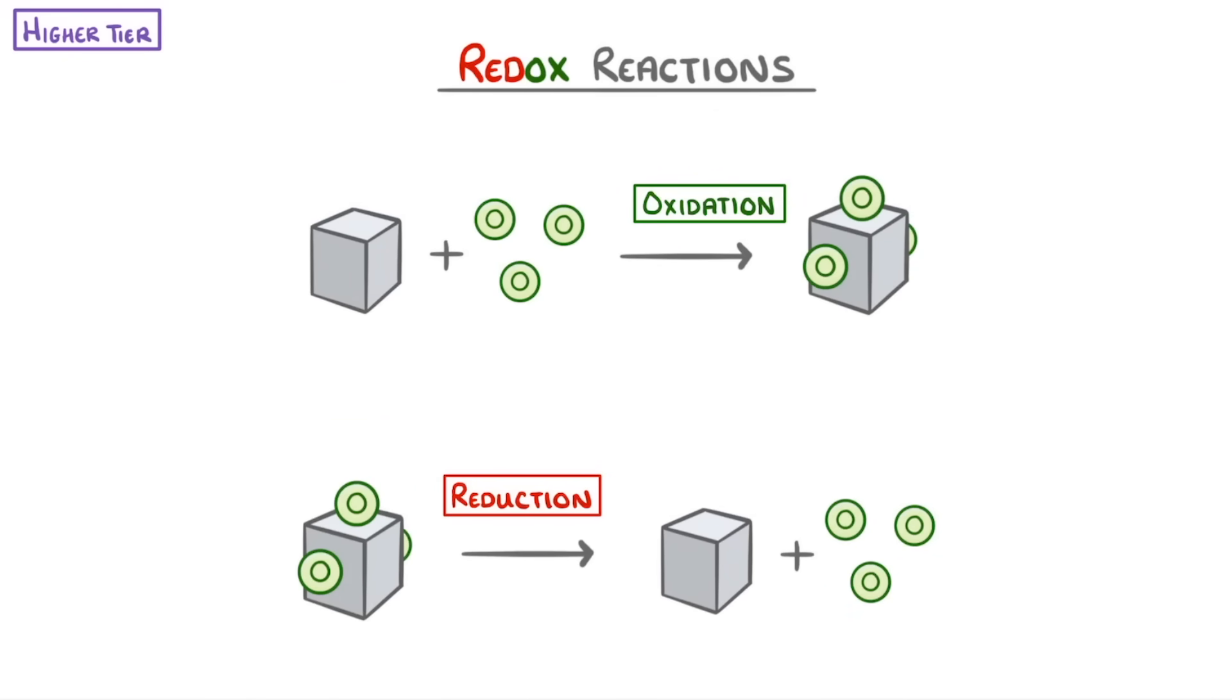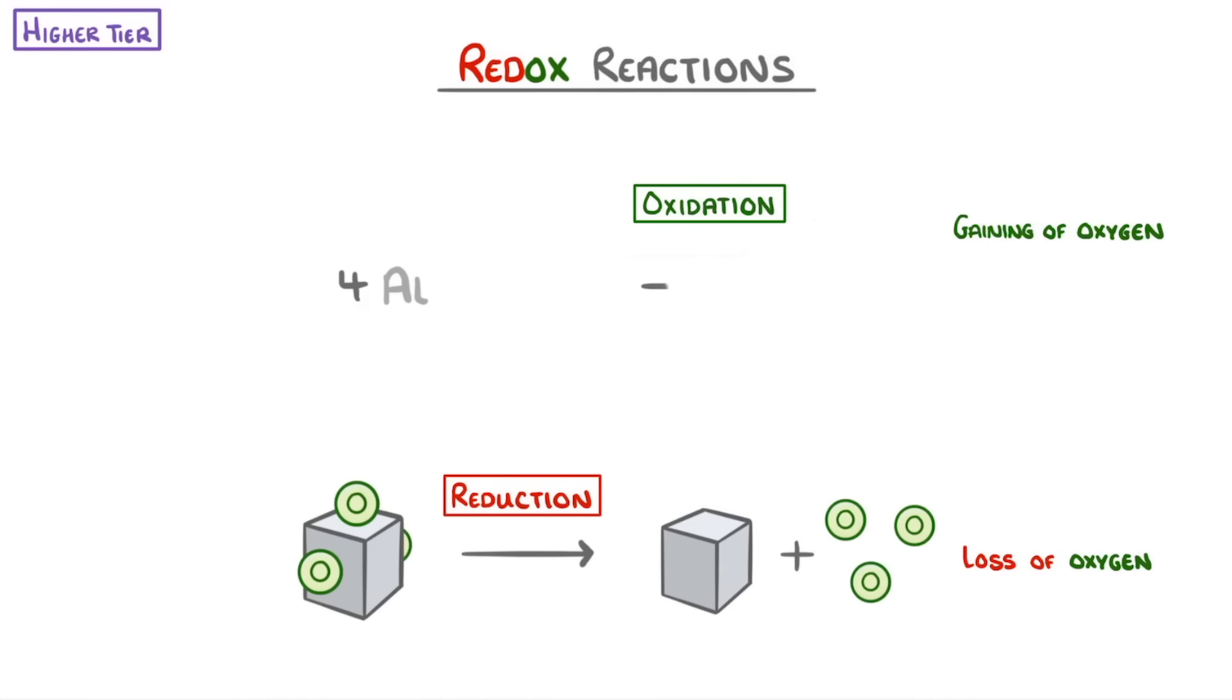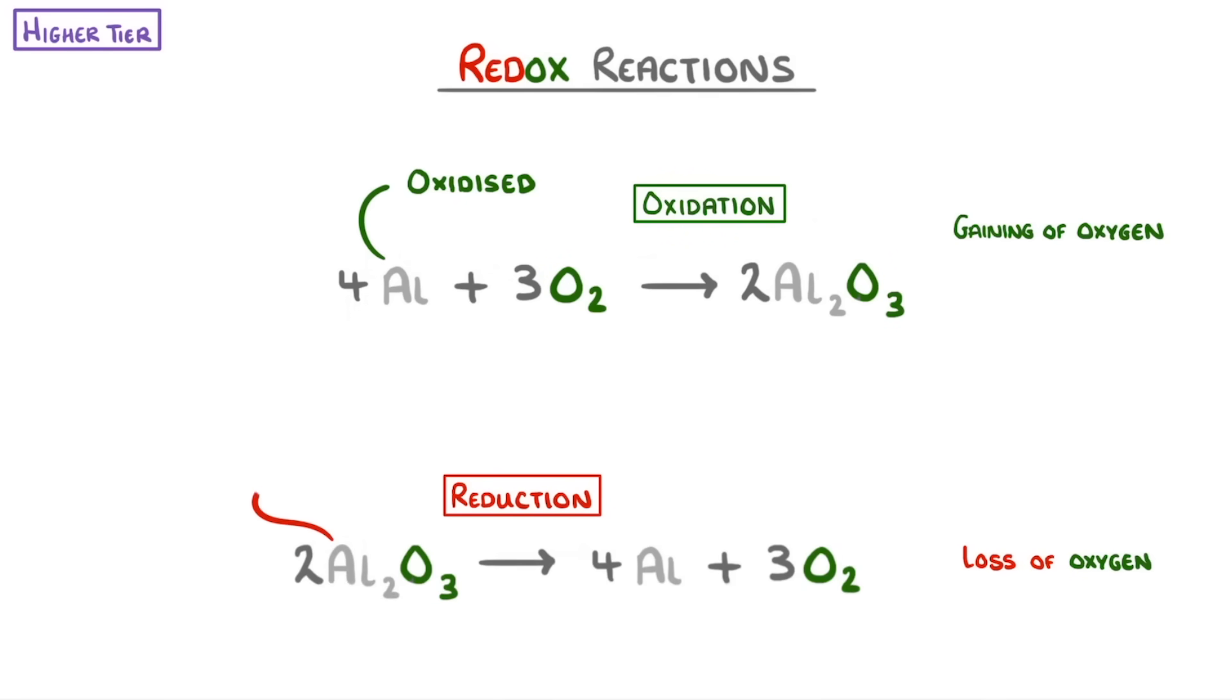We saw in a previous video that one meaning of oxidation is the gaining of oxygen, and that reduction is the loss of oxygen. For example, if aluminum reacts with oxygen to form aluminum oxide, we can say it's been oxidized, whereas if we take away that oxygen, then it's been reduced.